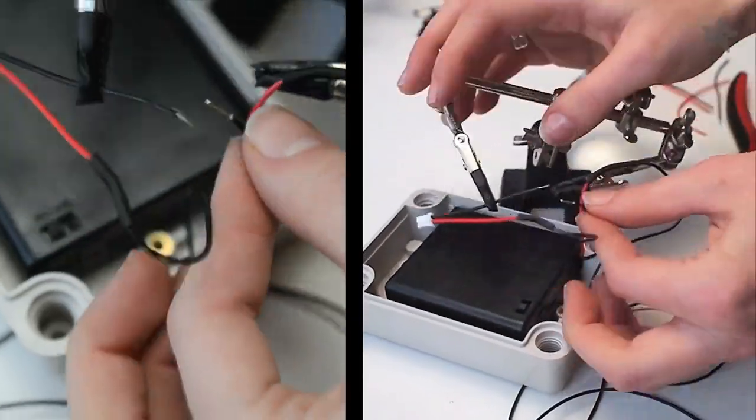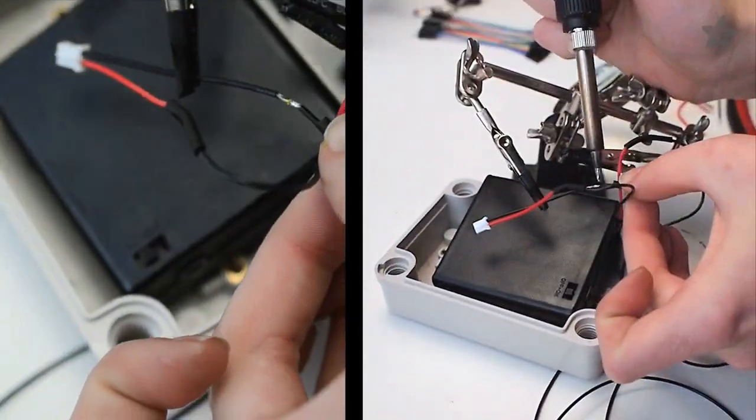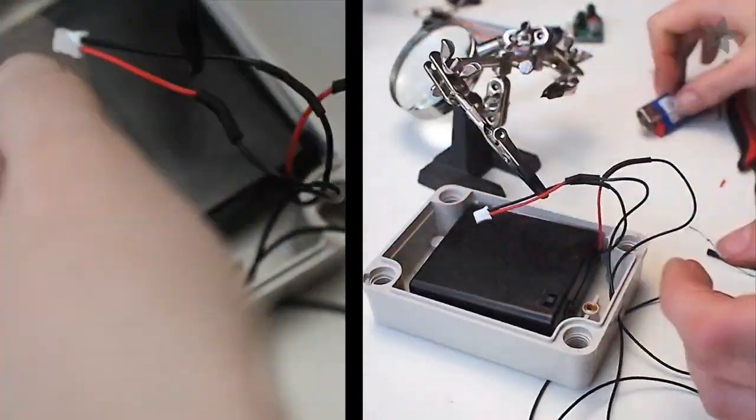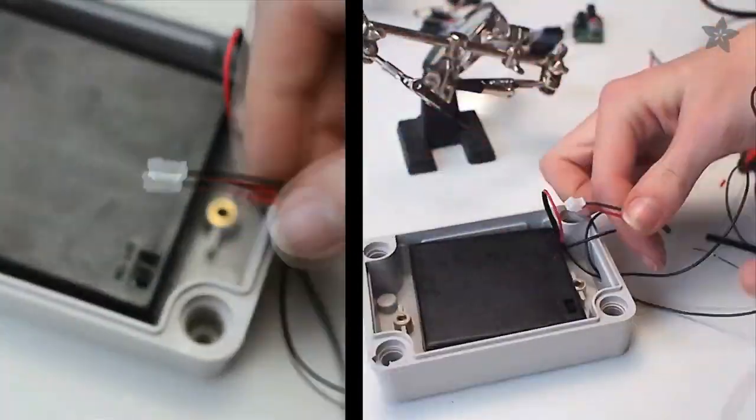This way you'll power the Flora through the JSD port and have a nice switch far away from the battery pack to control the bag from the outside.